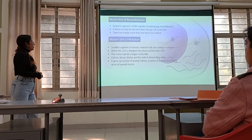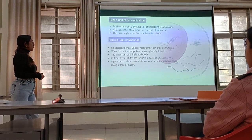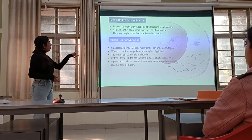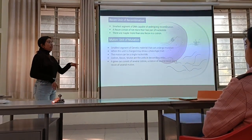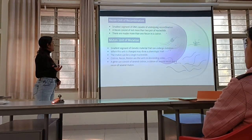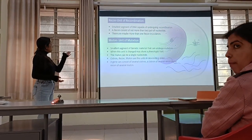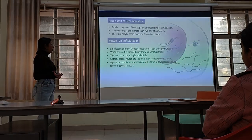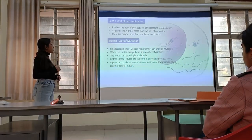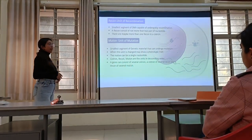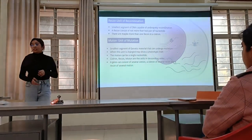When a muton unit is changed, it may show a new trait. Cistron, recon, and muton are units in decreasing order, which means a gene consists of several cistrons, a cistron consists of several recons, and a recon consists of several mutons.